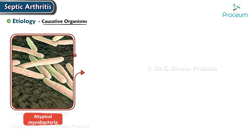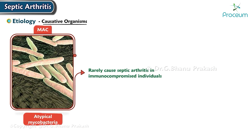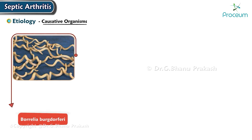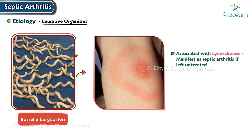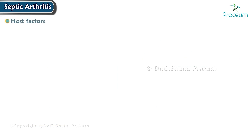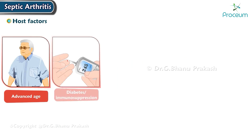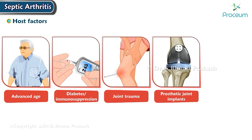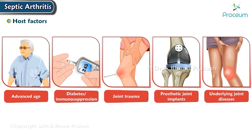Atypical mycobacteria such as Mycobacterium avium complex can rarely cause septic arthritis in immunocompromised individuals. Borrelia burgdorferi, associated with Lyme disease, can manifest as septic arthritis if left untreated. Risk factors for septic arthritis include advanced age, diabetes, immunosuppression, joint trauma, prosthetic joint implants, and underlying joint diseases.